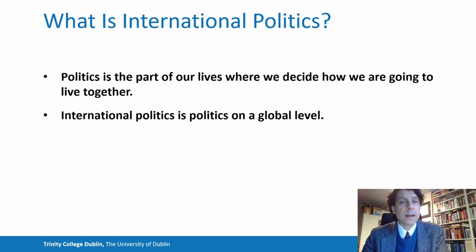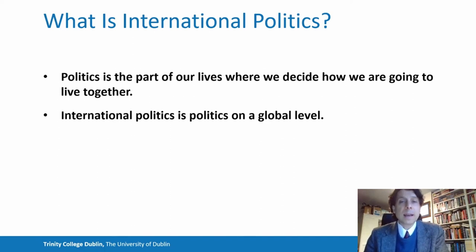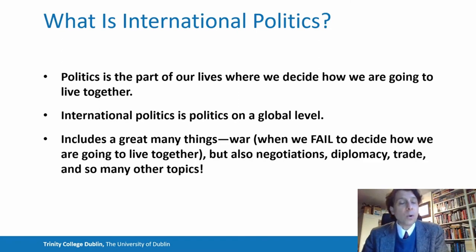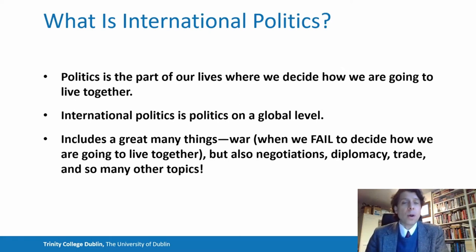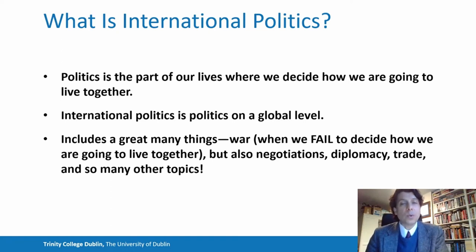As that implies, international politics is just politics on a global level — what happens when we do politics at the highest possible level on earth. Politics at that level includes a great many things. It includes war, of course — war is what happens when we try to come together and decide how we're going to live together and fail. But international politics also includes negotiations, diplomacy, trade, and all kinds of other topics that relate to how we go about deciding how we're going to live together.